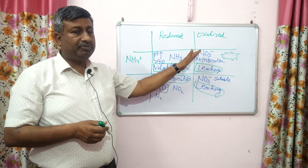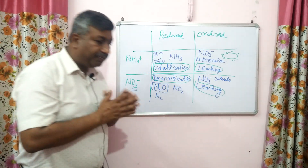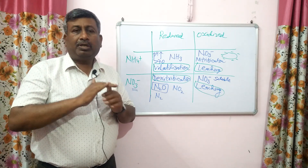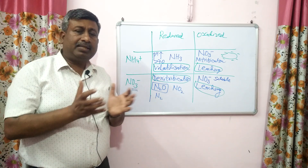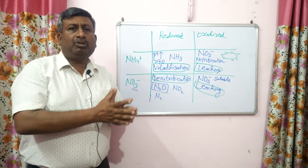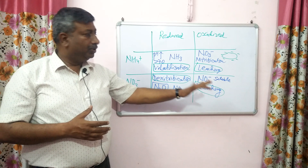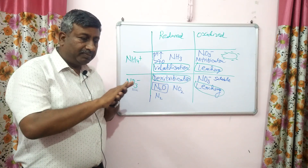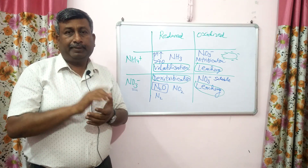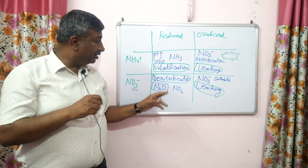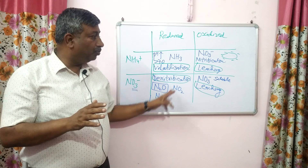So, reduced condition and oxidized condition of soil are responsible for different nitrogen loss processes. To summarize: volatilization results in loss as ammonia gas (NH₃); denitrification results in loss as nitrous oxide (N₂O); and leaching results in loss as nitrate. These three processes — volatilization, denitrification, and leaching — are responsible for nitrogen loss from the soil, making it unavailable to plants.